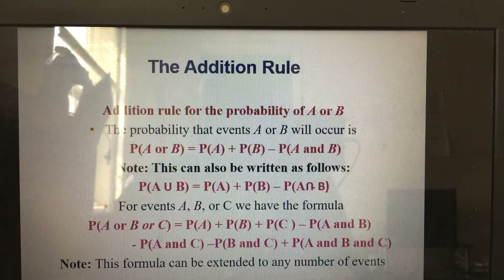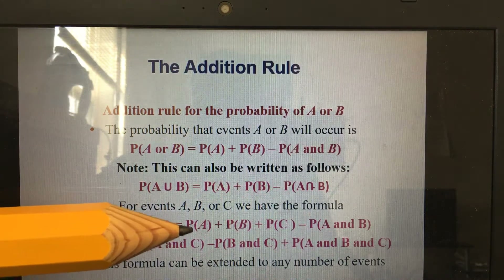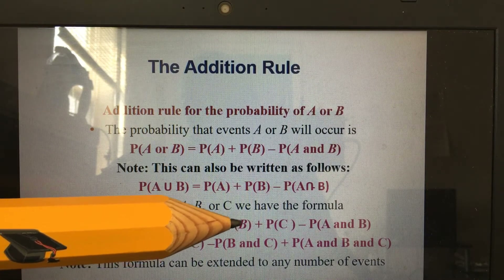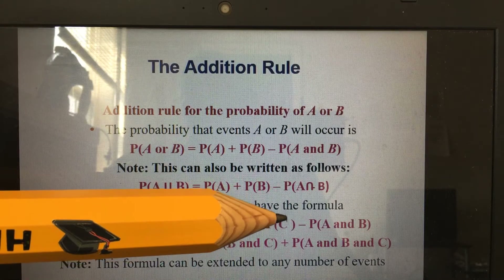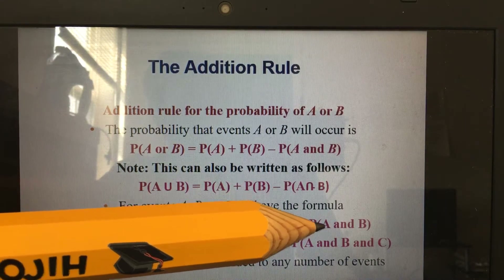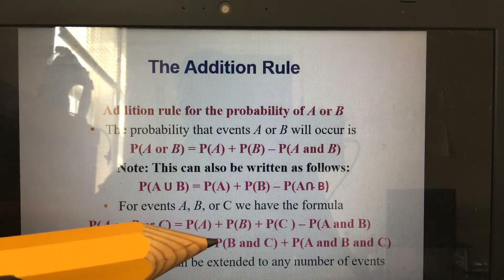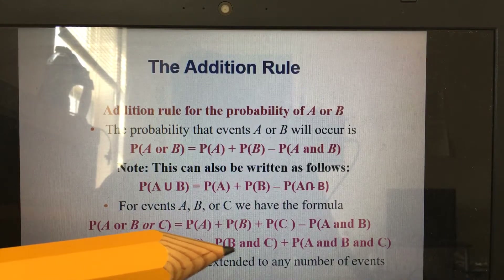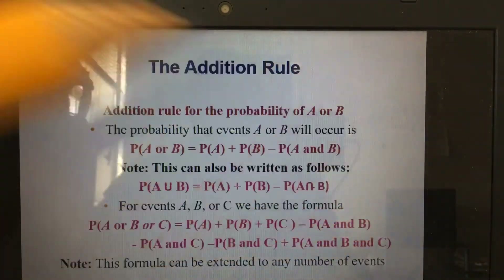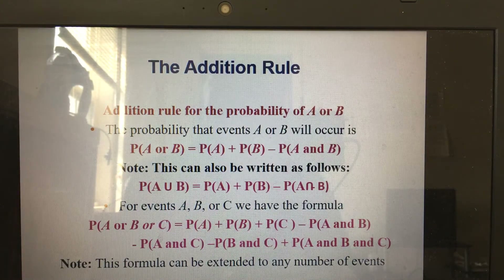If there are three events you can also use: P(A or B or C) = P(A) + P(B) + P(C) − P(A and B) − P(A and C) − P(B and C) + P(A and B and C). You can extend this to as many events as possible. In statistics we deal with a lot of formulas — some may look like a monster, but don't be scared; when you start applying them you'll see they are actually easy.